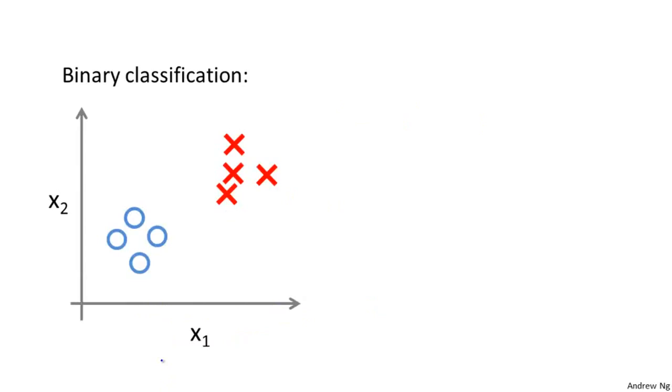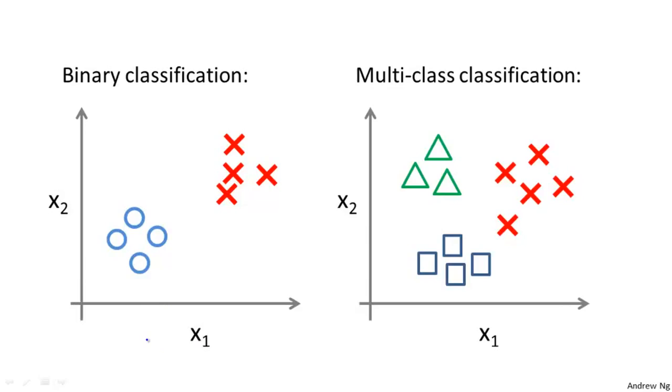Whereas previously, for a binary classification problem, our data sets look like this. For a multi-class classification problem, our data sets may look like this, where here, I'm using three different symbols to represent our three classes.